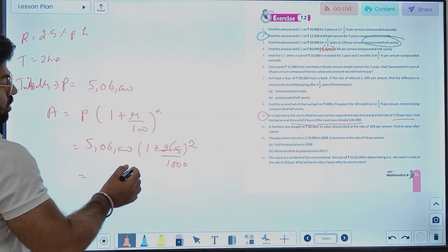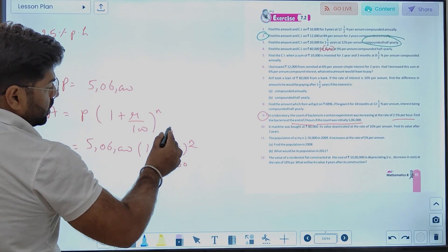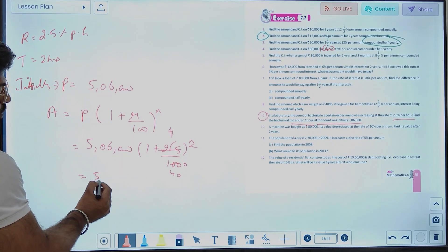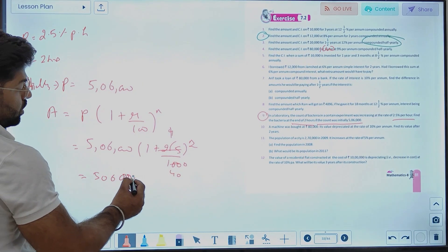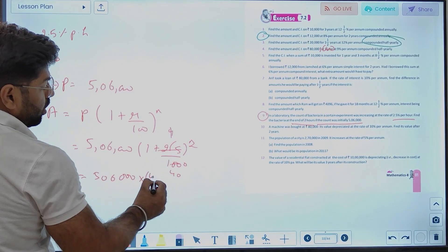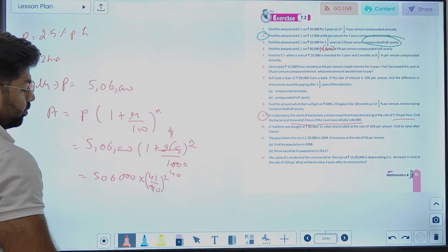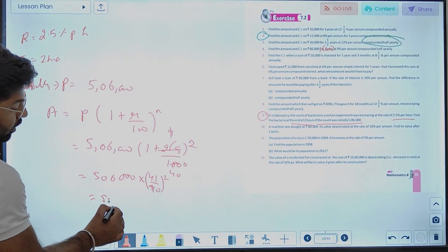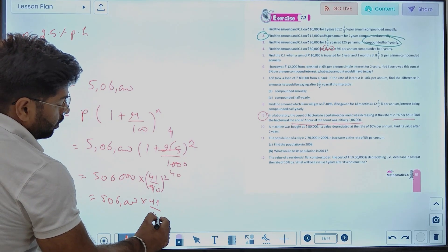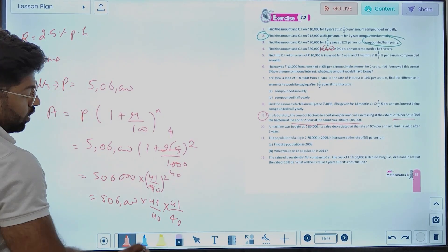Simplifying 25/1000 gives 1/40. So it's 506 times (1 plus 1/40) squared, which is 506 times 41/40 times 41/40. Canceling and dividing: 506 divided by 2 is 253. One 40 cancels, leaving us with calculations.